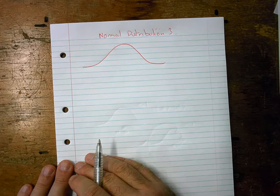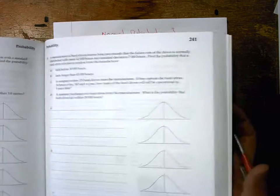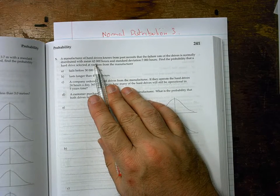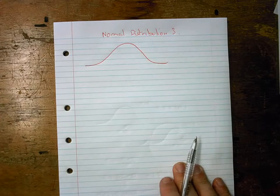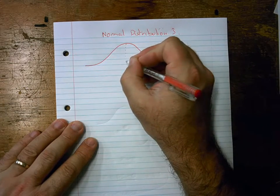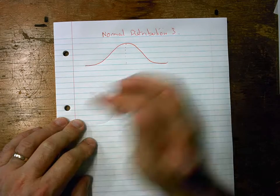The next thing it told us in the question is there's a mean of 42,000 hours. So the mean, this little knotty line, is not zero previously - it's been zero, now it's 42,000.